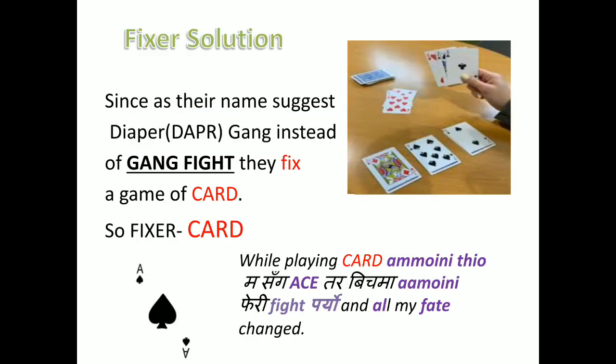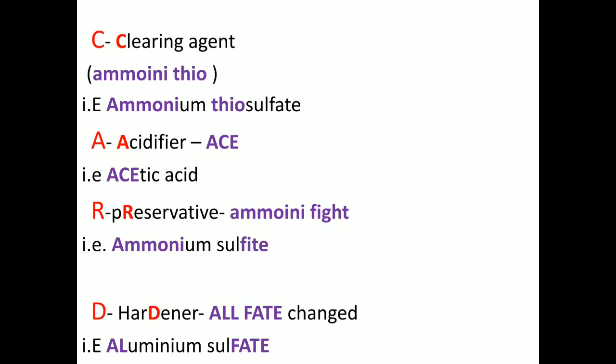Now for the fixer solution: since the diaper gang is not too cool to have a gang fight, instead they fix a game of cards. 'Card' stands for the components included in the fixer, written as C-A-R-D. As we all know, in a game of cards the strongest card is the spades ace. While playing cards, Amini had an ace, but in the middle there was a fight again, and due to the fight the game could not continue — so all fate gets changed.